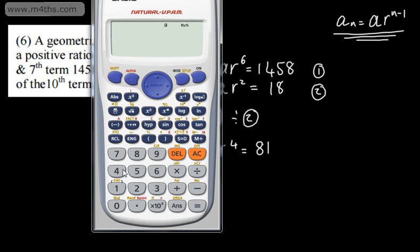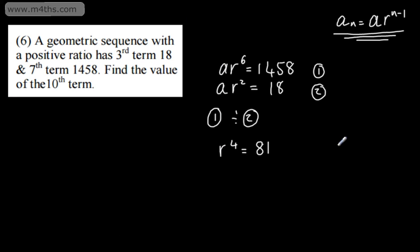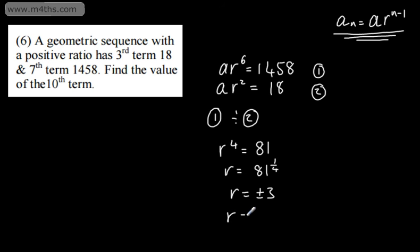Let's just go ahead and check that: 1458 divided by 18 gives us 81. From this we need to take the 4th root of 81, so 81 to the power of one quarter. This gives us plus or minus 3, so r equals plus or minus 3. We can say r is greater than 0, therefore the ratio is equal to 3.